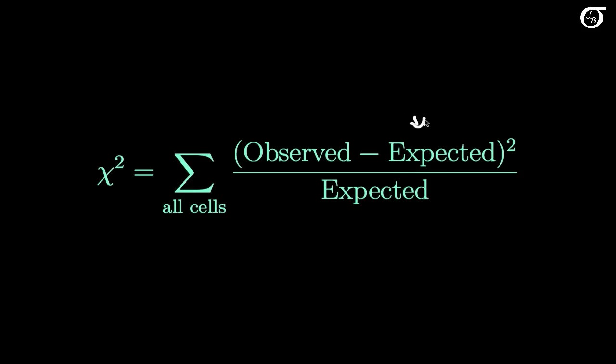This expected is our expected counts under the null hypothesis. The observed counts are what we see in a sample. If the observed counts are close to the expected counts, then that test statistic is going to be small. If the observed counts are very far from the expected counts, then that test statistic is going to be large. Large values of our chi-square test statistic give us evidence against the null hypothesis.